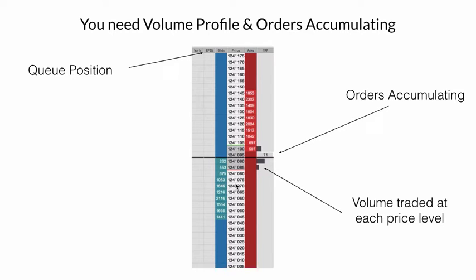The second thing we really need to be able to see is what's on the right-hand side, which is called the volume profile or volume at price. It might even be called the market profile in some instances. Basically, it's showing the accumulation of all the contracts, stocks, or whatever we're trading that have traded at that price level. This histogram shows us exactly that — a few contracts traded here, more there, and this many at this price level. The volume profile can be represented either by a histogram or physical numbers; it's really personal preference.